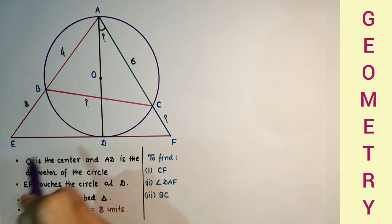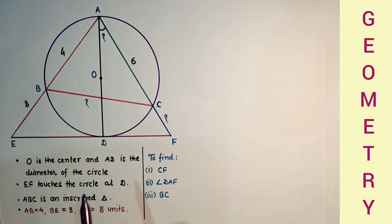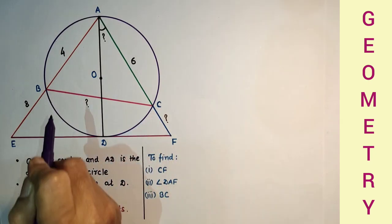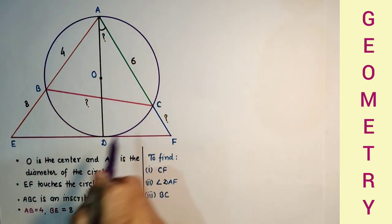The diagram is not scaled. AC is 6 units. And we have to find the length of CF, angle DAF, and the length of BC.